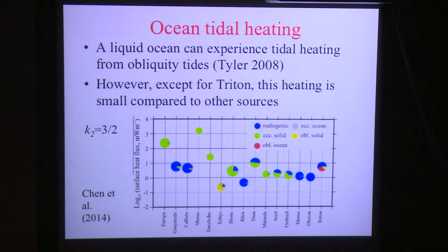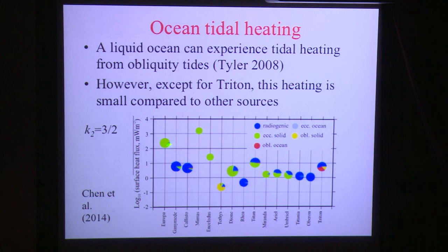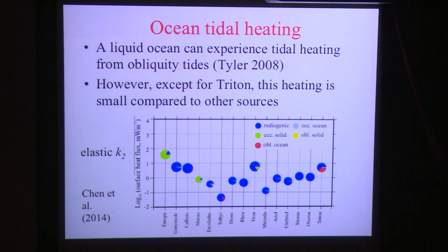In liquid oceans, tidal heating may also be important, particularly for obliquity tides rather than eccentricity tides. Looking at log heat flux for different satellites with pie charts showing heating type — blue for radiogenic, green for eccentricity tides in solid body, red for ocean tidal heating — the only object for which obliquity tides in the ocean are important is Triton. Possibly Tethys too. But in general, ocean tides don't significantly affect the overall thermal evolution of these satellites — they're just too small.